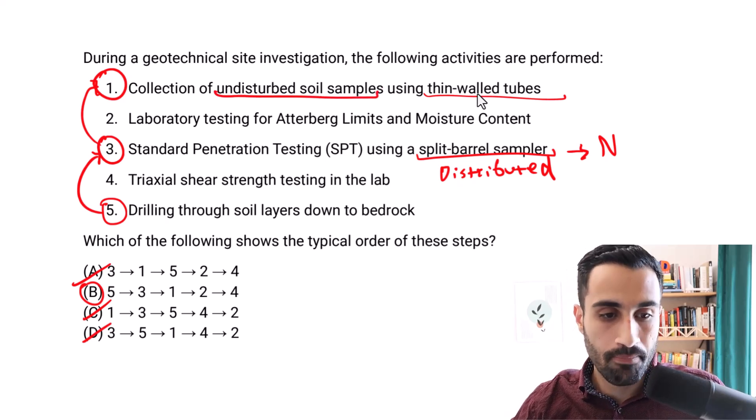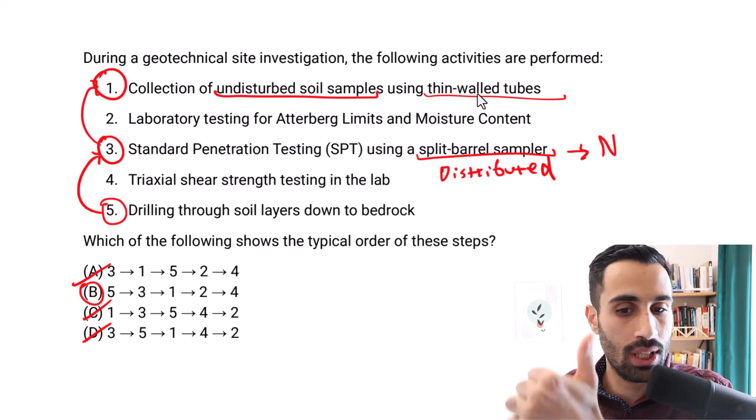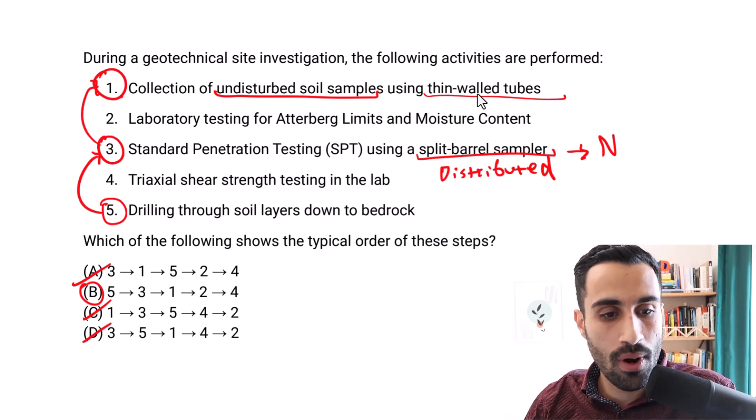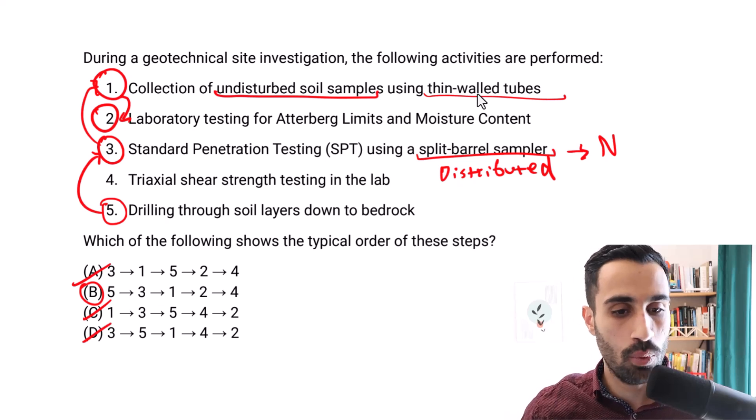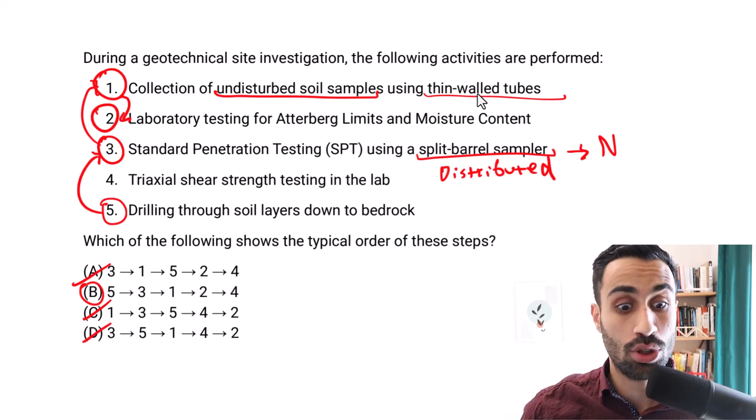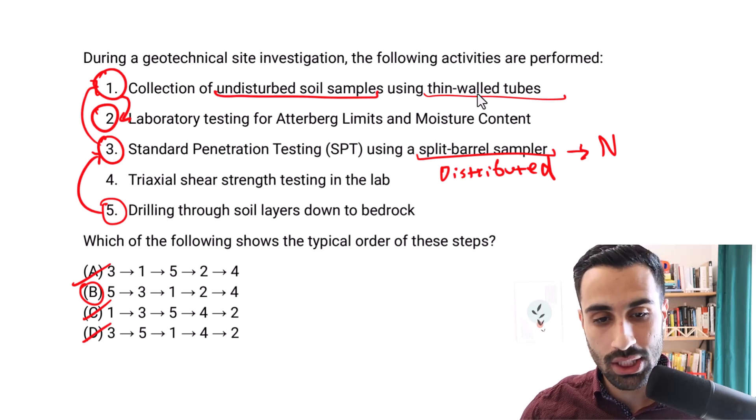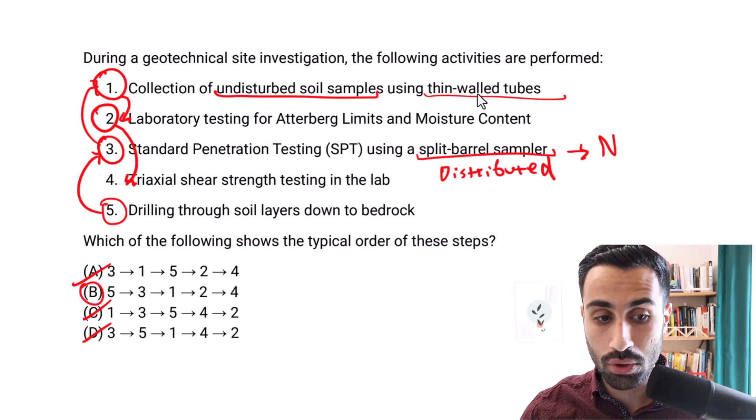So we go five to three to one. Then we first determine the very important classification, Atterberg limits, moisture content. So we go from one to two. Then from two, we finish off with the shear strength test, triaxial test, unconfined compression test, and the consolidation test using our values for the undisturbed soil samples. So we go back here to four to finish off.